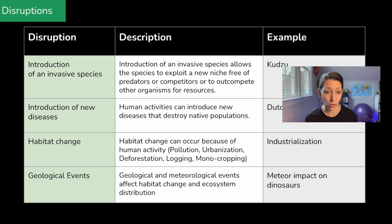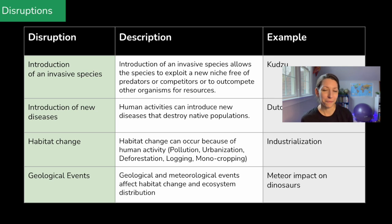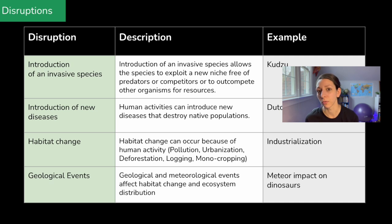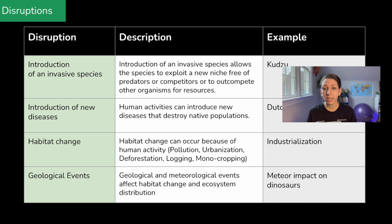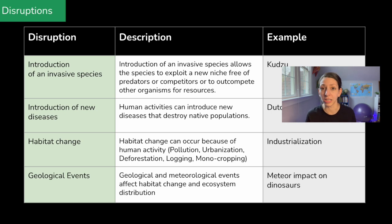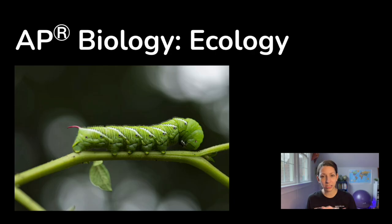Geological events can also cause disruptions. A meteor impact on the dinosaurs is a big one, but volcanic activity can result in changes to a local ecosystem. Floods, erosion, and other events can affect habitats and even the distribution of where different organisms live or entire ecosystems. But ecosystems are always changing — local ones and global ones — and we have evidence in the fossil record of ecosystems that were really different from long ago. These are just a few important examples in our ecology unit for AP Biology.